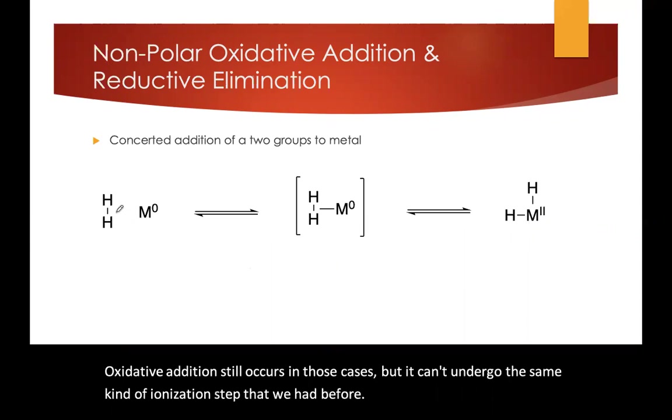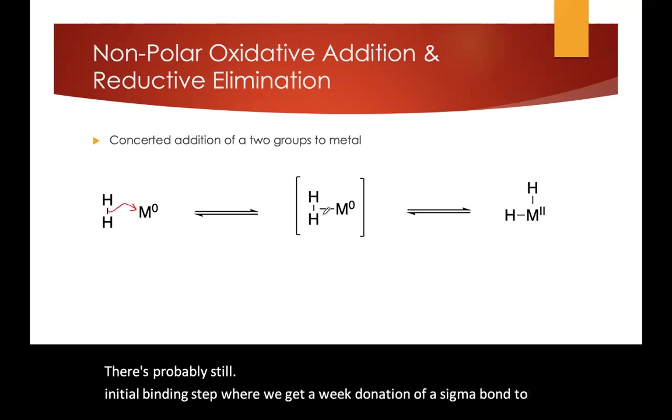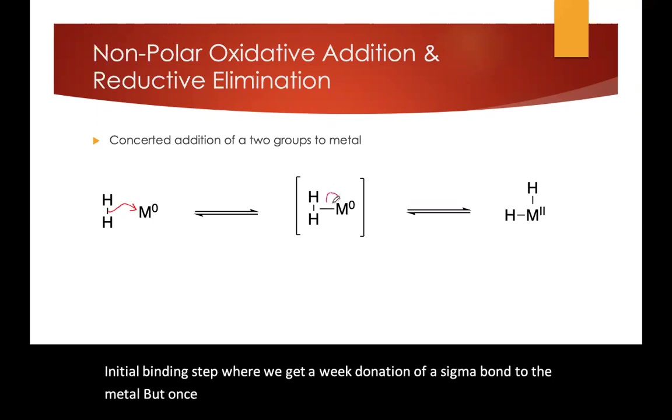Now in these reactions, there's probably still an initial binding step where we get a weak donation of a sigma bond to the metal. But once this compound is bound to the metal and close enough to the d electrons, we can get back donation into the sigma star orbital.